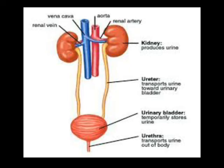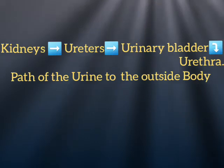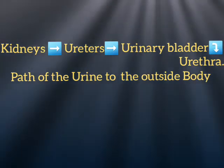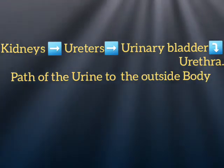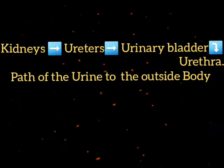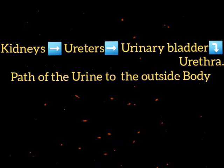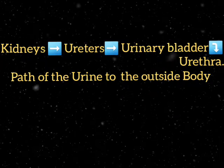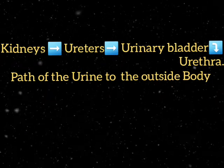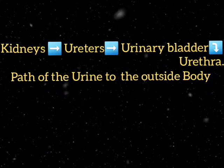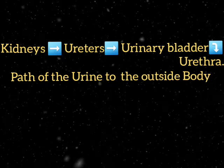Urine flows through the ureter to the urinary bladder. When the bladder is filled up, the urge to urinate comes. The path of urine out of the body goes from the kidney, through the ureter, to the urinary bladder, and out of the body through the urethra.